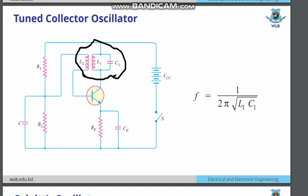After giving the switch, that is the tuned collector oscillator. It is known as the collector oscillator because there is a BJT amplifier here, and that has been connected with the collector part of the BJT — that is the collector.